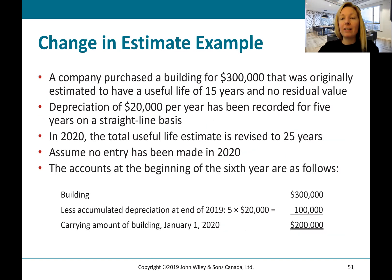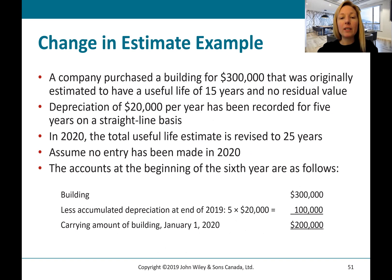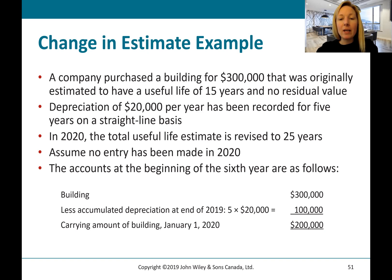Here's an example of a change in accounting estimate and how we account for it prospectively. A company purchased a building for $300,000 that was originally estimated to have a useful life of 15 years and no residual value. Depreciation of $20,000 per year has been recorded for five years on a straight-line basis. In 2020, the total useful life estimate is revised to 25 years, and we assume no entry has been made yet in 2020. At the beginning of the sixth year, the building is on the statement of financial position at $300,000, accumulated depreciation is $100,000 (five years at $20,000), giving a carrying amount of $200,000.